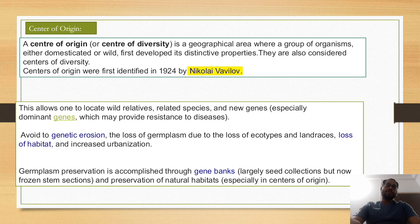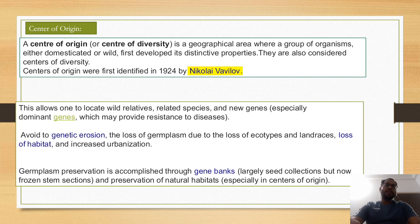Suppose a specific area where a particular variety has been eradicated or finished, then we can bring a species from the center of origin. For this purpose, governments are creating different gene banks — that is, collection of a large number of plant materials in the form of seed bank, field bank, or cell culture, stem cell culture, like that.